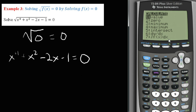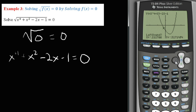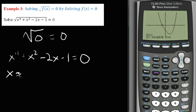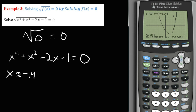To find the solutions, go to Second, Trace, Zeros. Move the cursor to the left boundary and hit Enter, then the right boundary, Enter, and guess. The first zero is approximately x equals negative 0.4. For the second zero, repeat the process with appropriate bounds. The second zero is approximately x equals 1.2. These are the two solutions to the radical equation, and they are also the same two solutions to the expression under the radical set to zero.